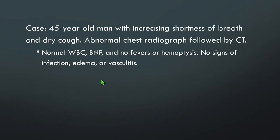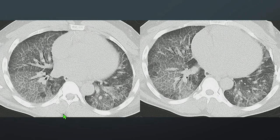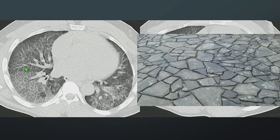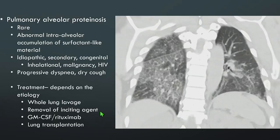Case: a 45-year-old man with increasing shortness of breath and dry cough, abnormal chest x-ray, normal white count, normal BNP, no fevers or hemoptysis — no signs of infection, edema, or vasculitis. CT shows bilateral ground glass with intervening smooth interlobular septal thickening — the crazy paving pattern. This is pulmonary alveolar proteinosis, a rare disease with abnormal intra-alveolar accumulation of surfactant-like material, most often idiopathic but can be secondary to malignancy, HIV, or congenital causes. Patients present with progressive dyspnea and dry cough, and treatment is usually whole lung lavage.